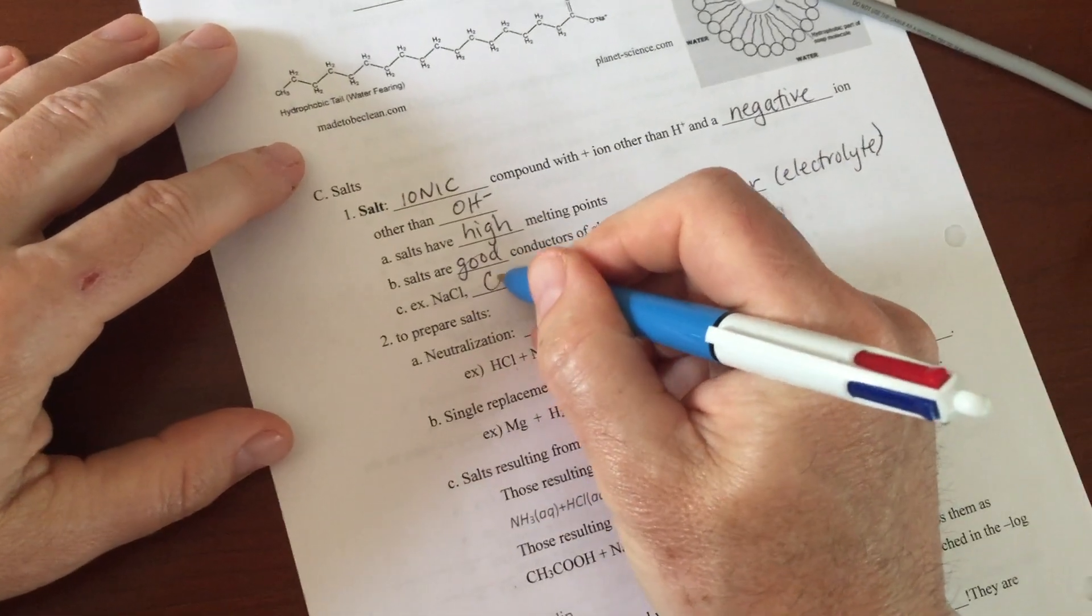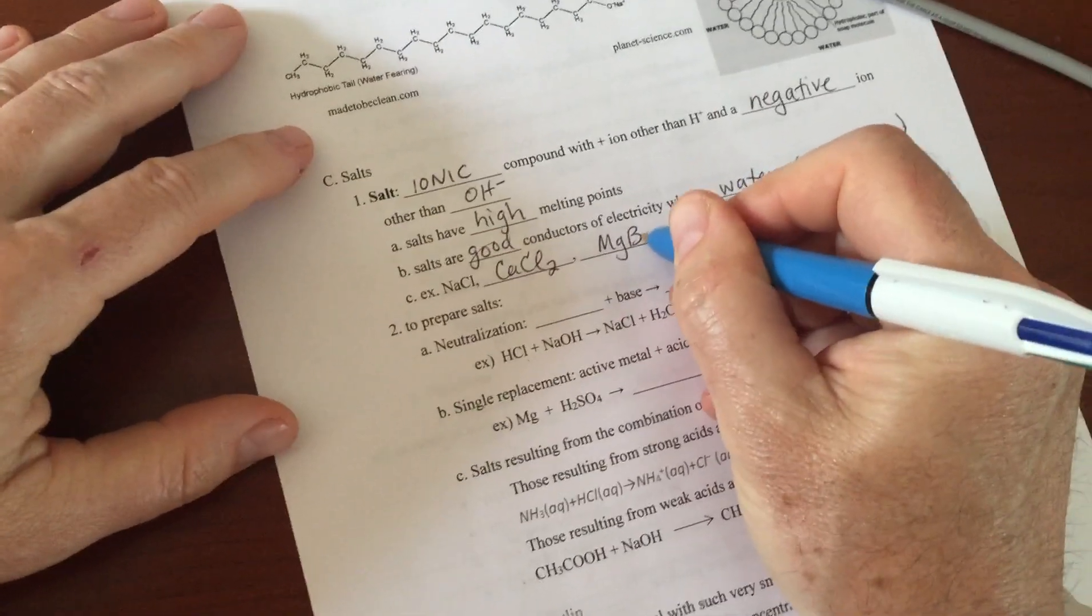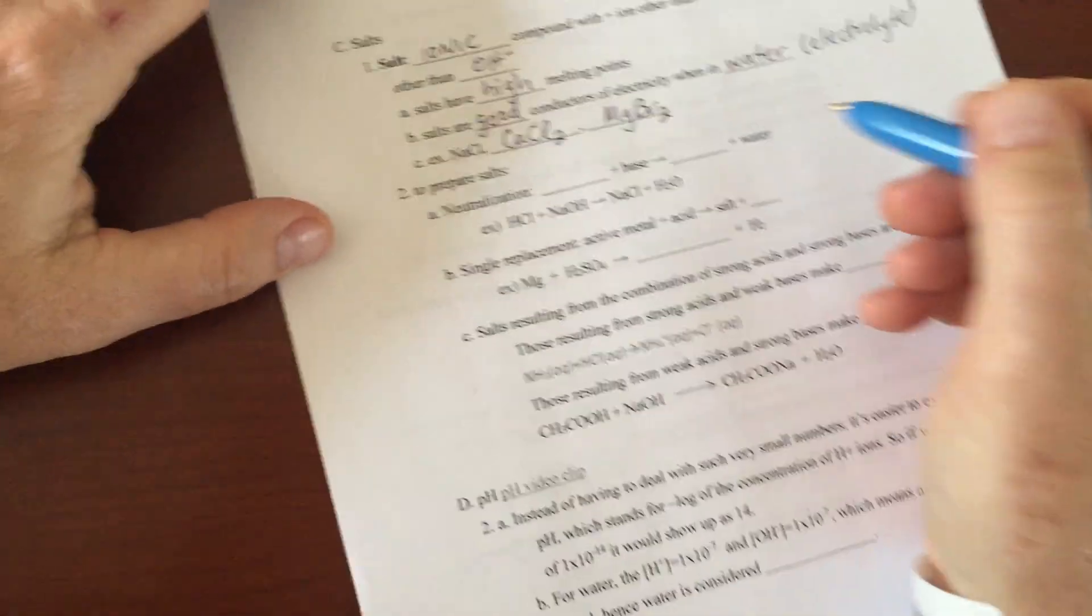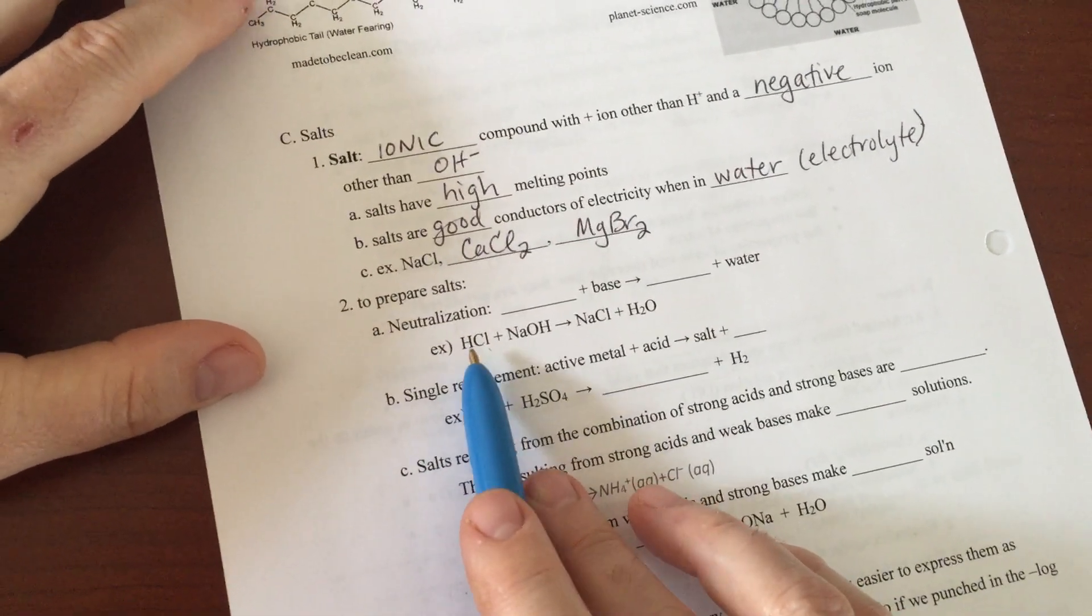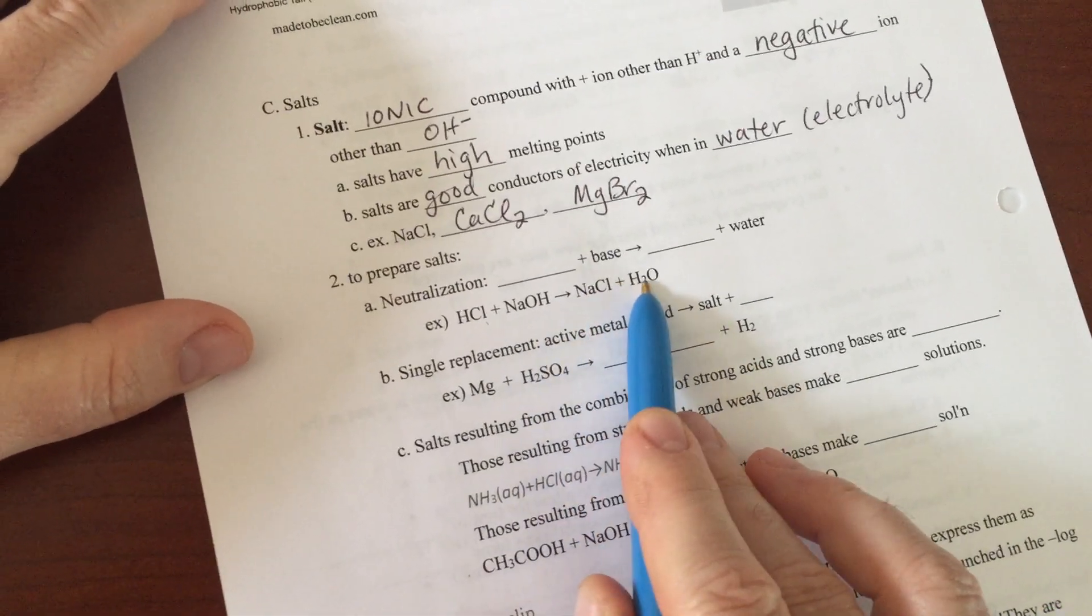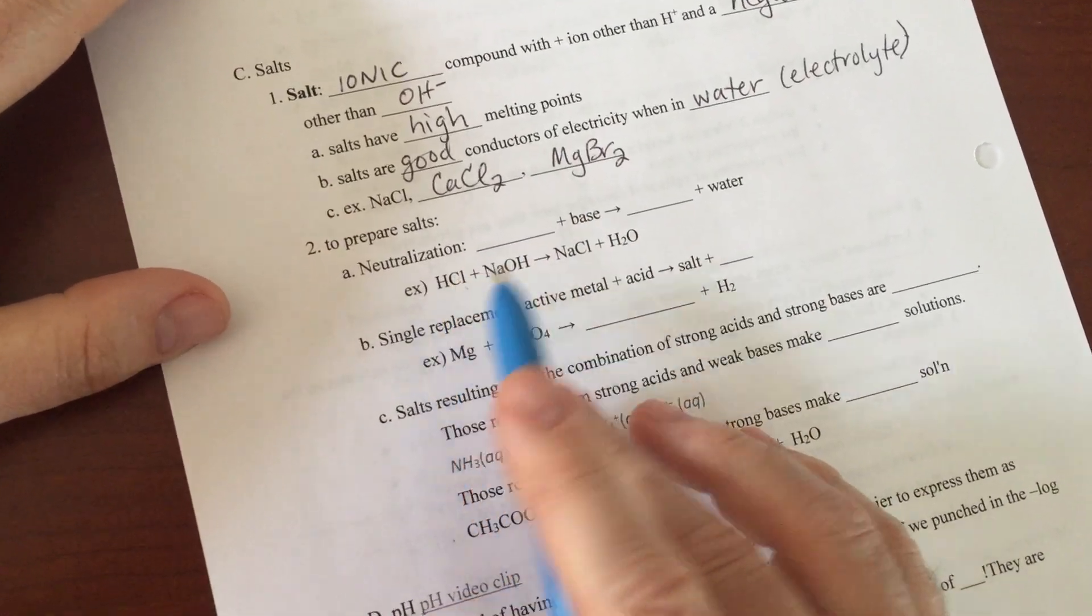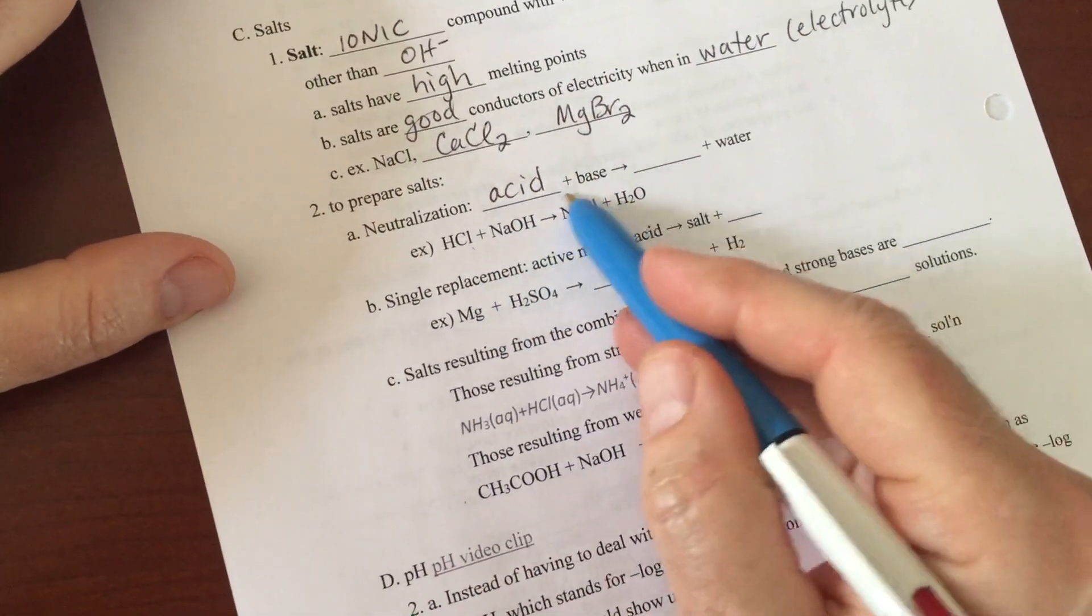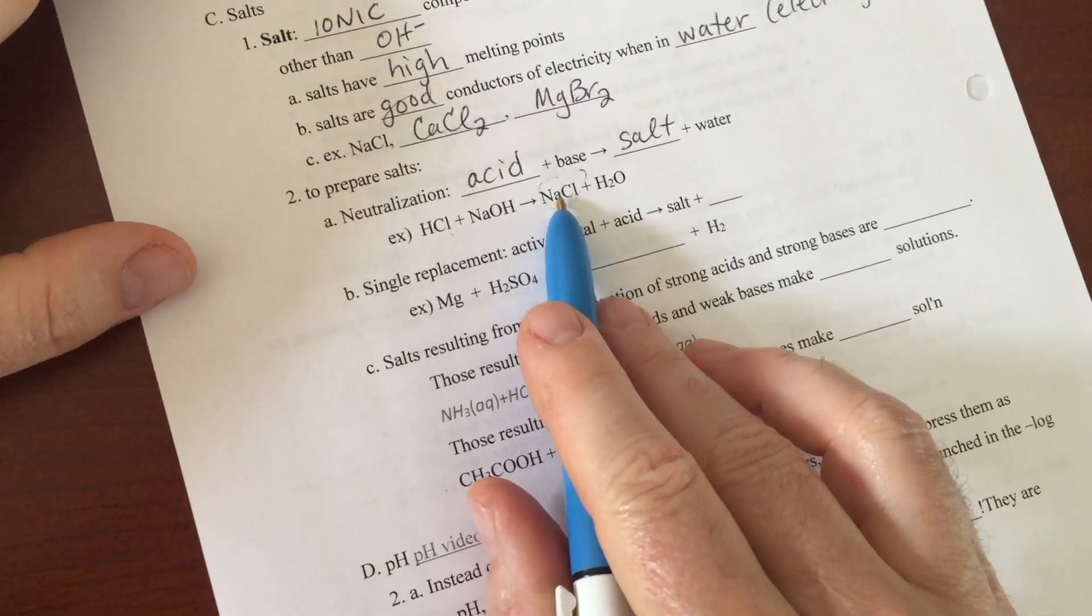Some examples are sodium chloride, calcium chloride, and magnesium bromide. The next section is how to prepare salts. You can get salts from what's called a neutralization reaction. One of them shown right here: hydrochloric acid plus sodium hydroxide gives you sodium chloride and water. So here's the base and HCl is an acid. When you combine an acid and a base, you get a salt. In this case, it's the salt that you put on your spaghetti, right? That's sodium chloride.